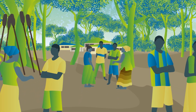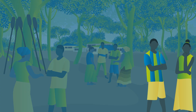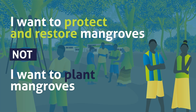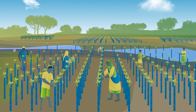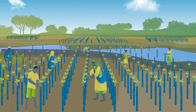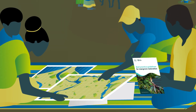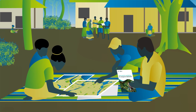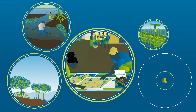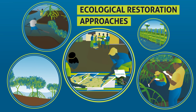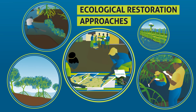Before starting, you need to think: I want to protect and restore mangroves — not just plant mangroves. Instead of planting monocultures with limited benefits for people and nature, aim for restoring mangroves with multiple and naturally distributed species. This can be achieved through ecological restoration approaches.